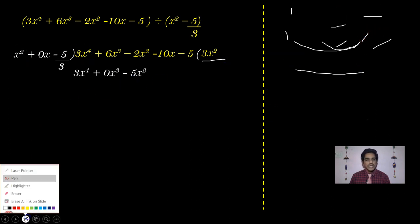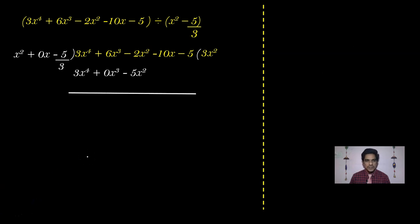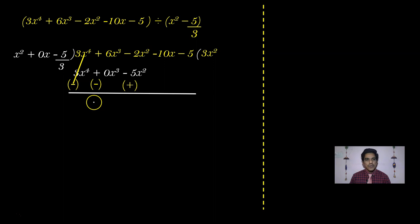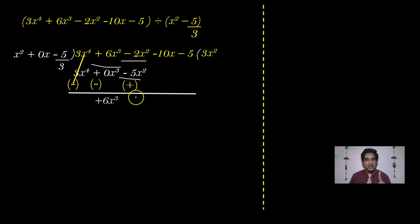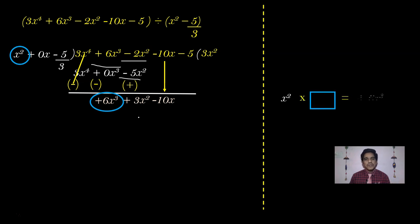Multiply the divisor x² + 0x - 5/3 by 3x²: we get 3x⁴ + 0x³ - 5x². Write 3x² in the quotient and 3x⁴ + 0x³ - 5x² in the dividend part. Now do the subtraction - change the signs. We get: 3x⁴ - 3x⁴ = 0; 6x³ + 0 = 6x³; and -2x² + 5x² = +3x². Carry -10x forward.